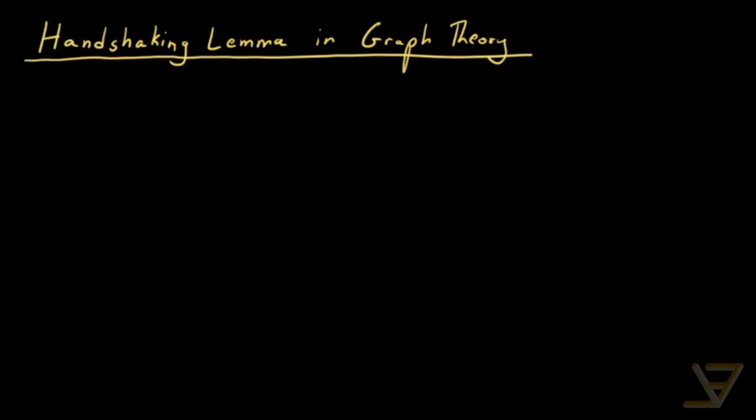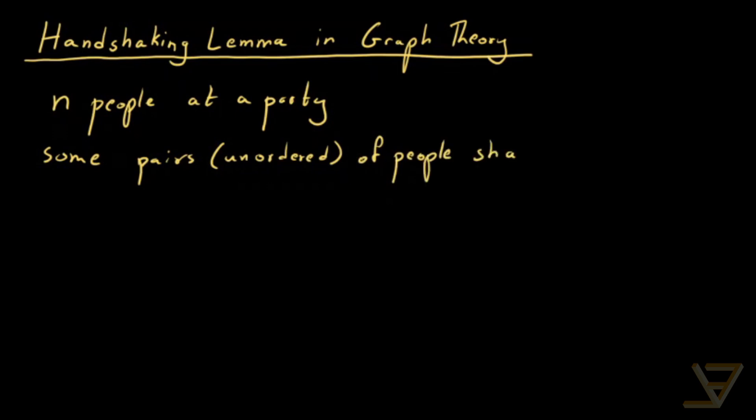Hi everyone. Let's talk about the handshaking lemma in graph theory. Let's suppose there are n people at a party and some pairs—we're going to consider unordered pairs—of people shake hands. So not everybody shakes hands with each other, but there are a few restrictions that I want to pose.